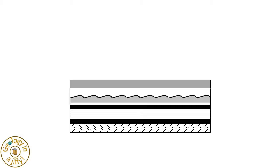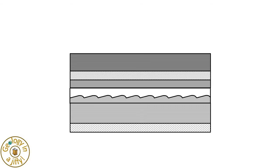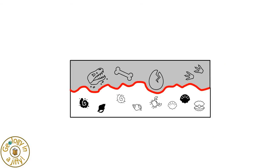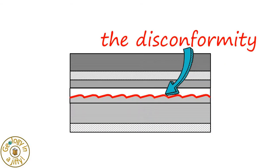After this, sedimentation continues, with more layers building up on top. This can make disconformities sometimes difficult to see, with only a sudden change in fossils exposing the disconformity. The disconformity is the break in layers due to the erosion of an older layer.